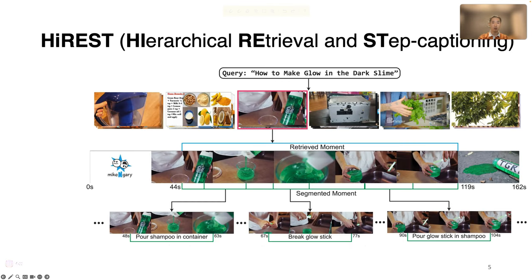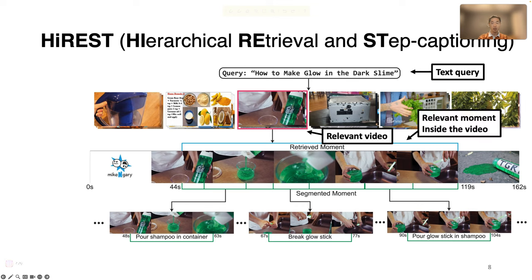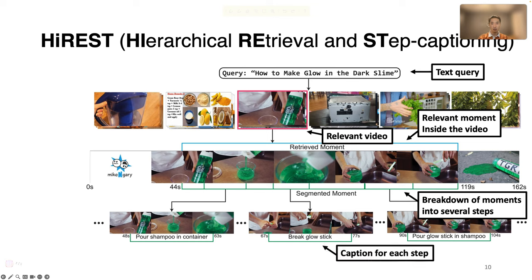To support this, we introduce HiREST, a hierarchical instructional video dataset for a holistic benchmark of information retrieval from a video corpus. HiREST consists of five annotations: text queries such as 'how to make a glow in the dark slime,' videos relevant to the text query, timestamps of video moments that are relevant to the text query, breakdown of the moments into several steps, and manually written English captions for each step, such as 'pour shampoo in container' and 'break glow stick.'